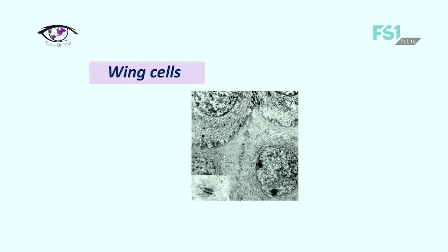Wing cells: a prominent characteristic of these cells is an abundance of intracellular keratin tonofilaments. Wing cells are distinguished by a variety of polygonal shapes and by their large ovoid nuclei.